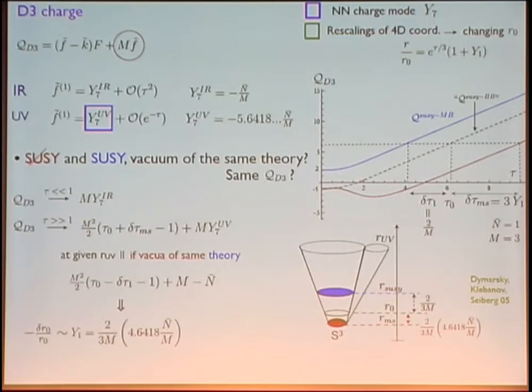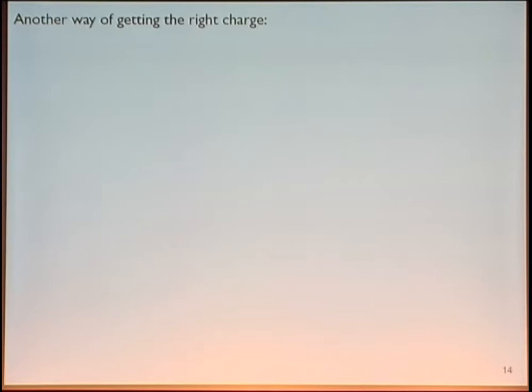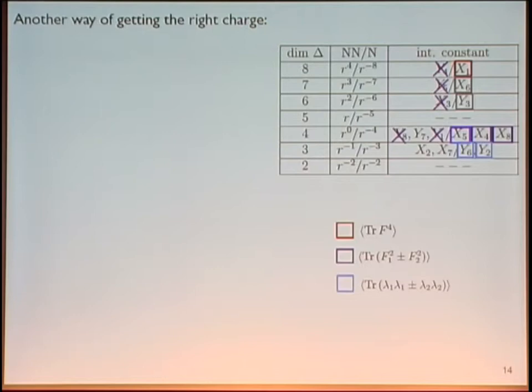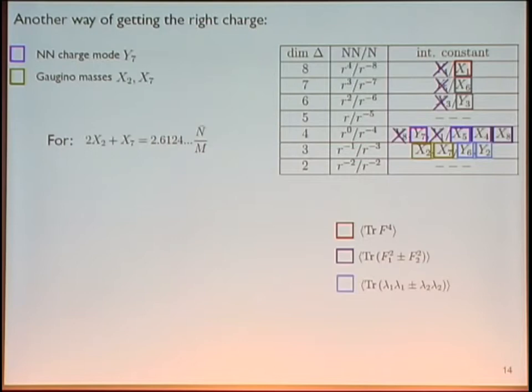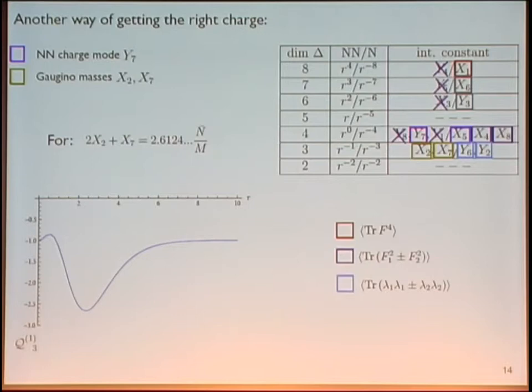If you do not like these rescalings of the four-dimensional coordinate, there is another way of getting the right charge: turn on the non-normalizable modes X2 and X7, which correspond to gaugino masses. You can turn on gaugino masses in a particular combination given by some non-rational number times N-bar over M, and then the first-order Maxwell D3 charge starts at minus 1, does something, and comes back to minus 1. So if you turn on gaugino masses, you do not need to do these rescalings of the four-dimensional coordinates.